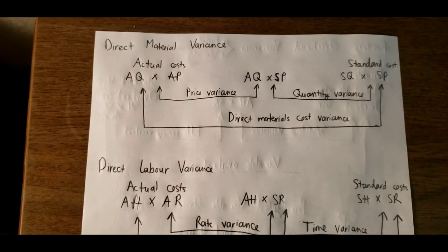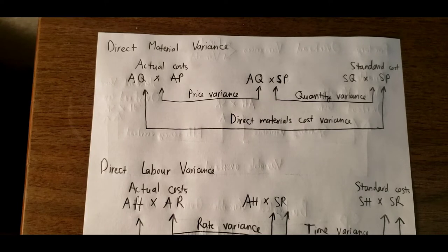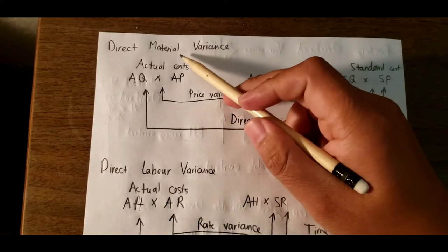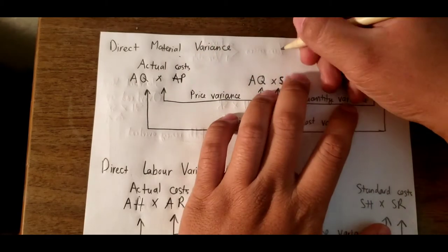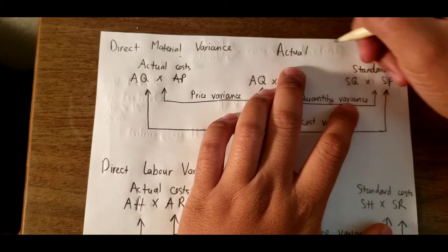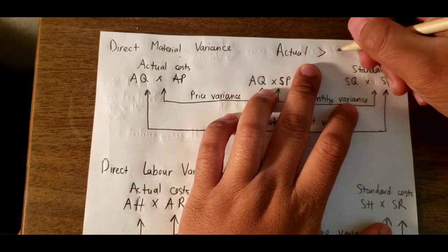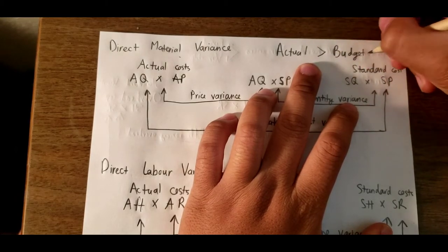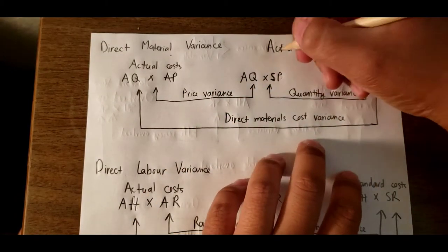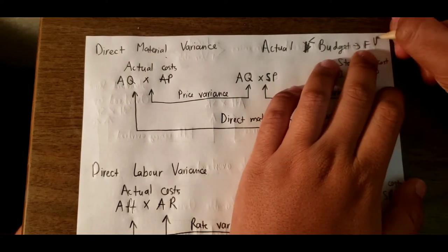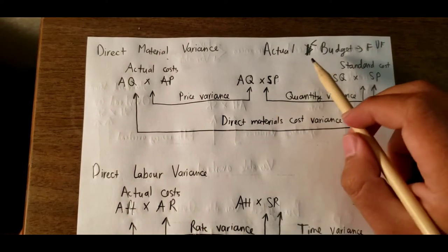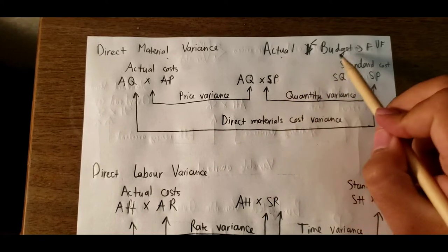Hello everybody. Today I will talk about different kinds of variances on the CPA test and cost accounting. We need to learn how to calculate variances. When the actual is higher than the budget, we call that unfavorable, but if the actual is below the budget, we call it favorable.